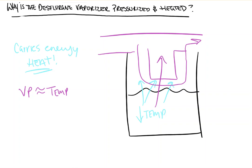As such, in order to maintain consistent output of volatile anesthetic, the solution must be warmed to facilitate molecules moving from liquid to vapor phase at such high pressures.